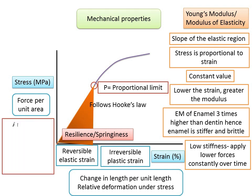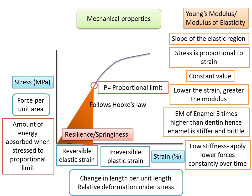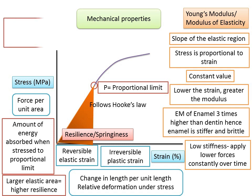Resilience is popularly associated with springiness. It is defined as the amount of energy absorbed within a unit volume of a structure when stressed to its proportional limit, calculated as the area under the elastic region of the stress-strain plot up to the proportional limit. A material with a larger elastic area has higher resilience. For orthodontic arch wires, the wire should exhibit high resilience to increase the working range of the appliance.